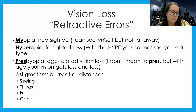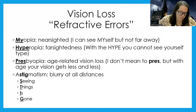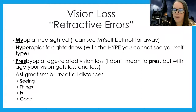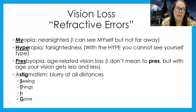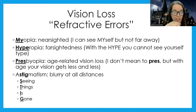Let's talk about the first kind of problem we can have with vision: refractive errors, also known as vision loss. The first term is myopia, or nearsightedness — this is the most common. Most people who have glasses or vision issues have myopia. In myopia, I always think 'I can see myself' — meaning you can see close up but can't see far away. So these are people who have trouble seeing things at a distance. If you have a friend with myopia driving you somewhere, they better have their glasses or contacts on.